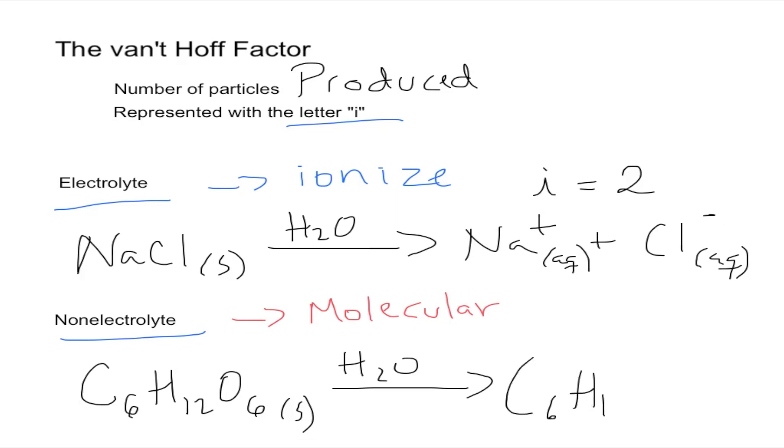So instead of being solid, it's now aqueous. But it didn't separate into any ions, there's no cation, there's no anion, it's still molecular. So when we count our products, we'll see that our van't Hoff factor is equal to one. Because there was only one thing produced.